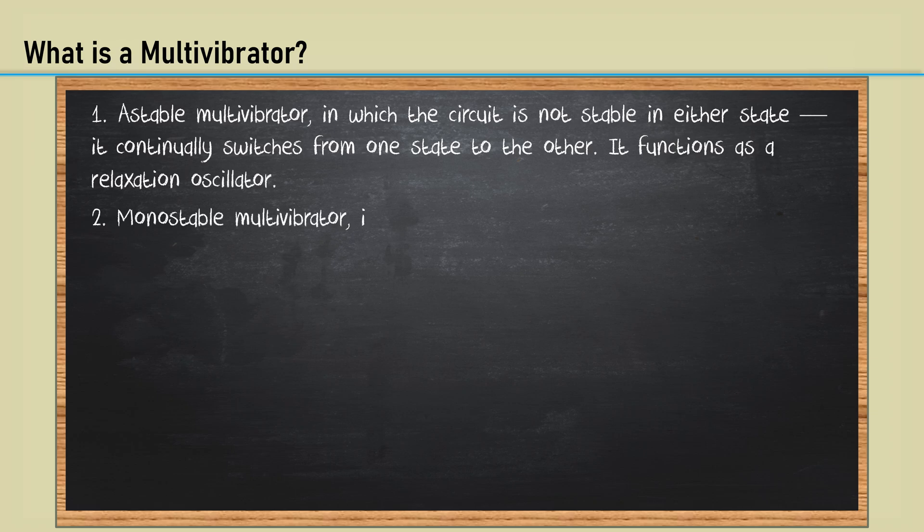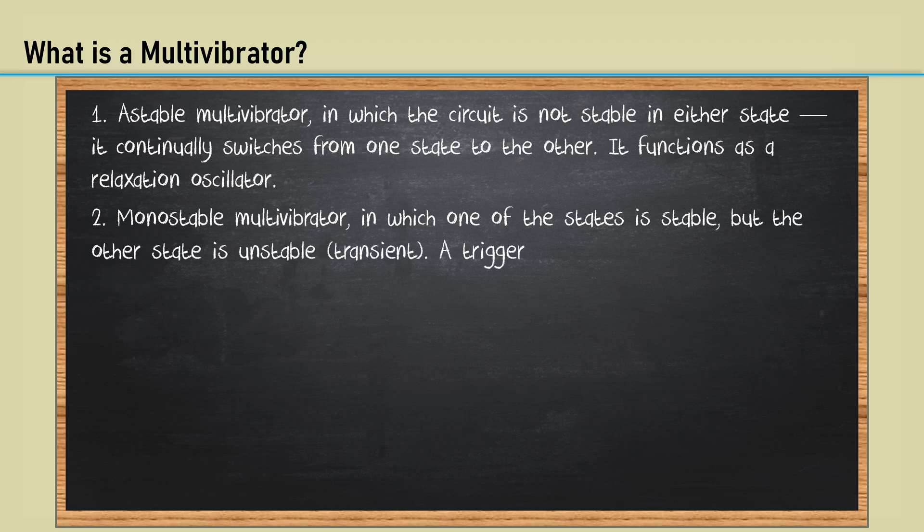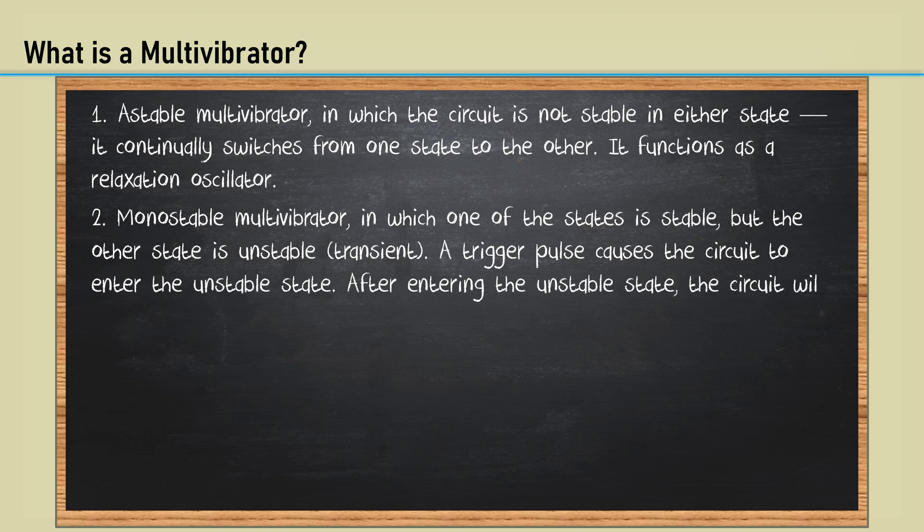Monostable multivibrator, in which one of the states is stable, but the other state is unstable, or transient. A trigger pulse causes the circuit to enter the unstable state. After entering the unstable state, the circuit will return to a stable state after a set time. This circuit is known as a one-shot.